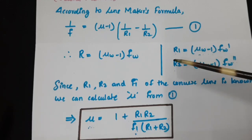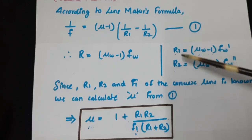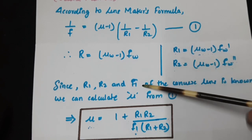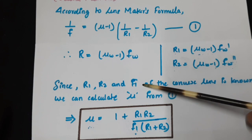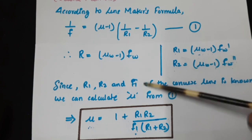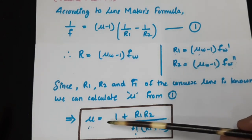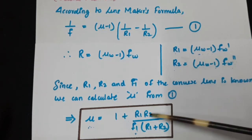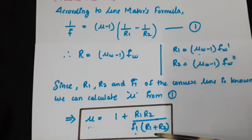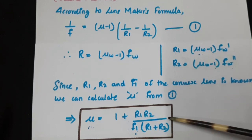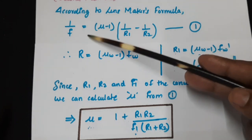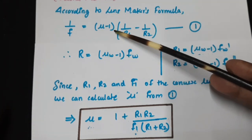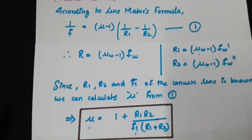Now that the two constants R1 and R2 are evaluated, and f1 the focal length of the convex lens is already evaluated in stage 1, we can find the refractive index of the material of the lens as: μ = 1 + (R1·R2) / (f1·(R1 + R2)). This equation is nothing but a rearranged form of the lens maker's formula: 1/f = (μ - 1)(1/R1 - 1/R2).